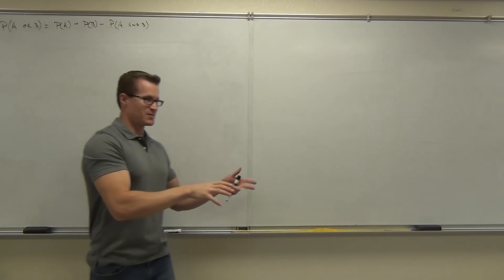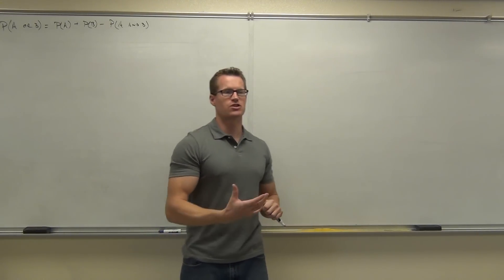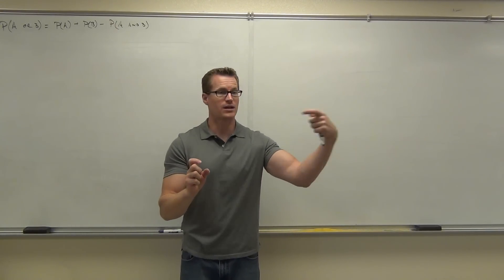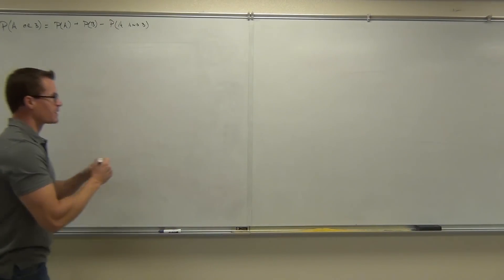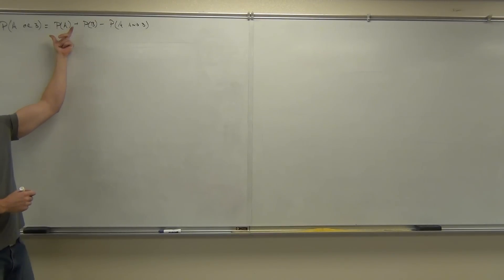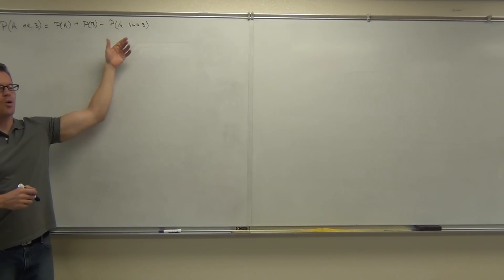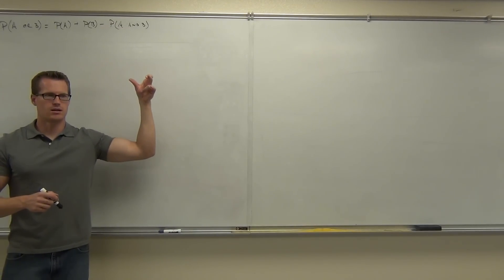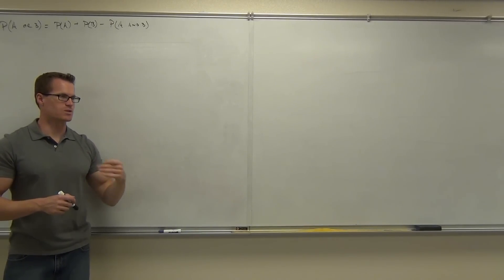Before our test, we were talking about something called the addition rule. The addition rule says if you want to find the probability of one event or another event occurring — that 'or' word — we add the probability of the first event plus the probability of the second event, then subtract the double count: the probability of event A and event B occurring in the same trial.